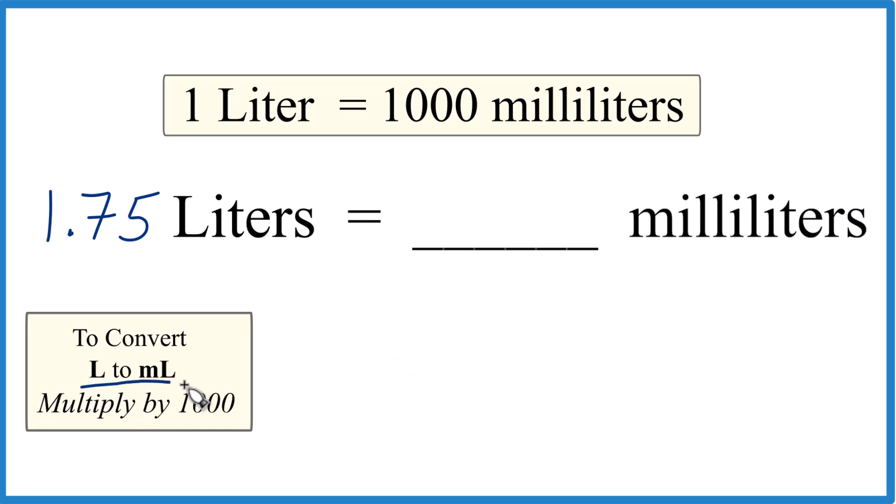So if you're going from liters to milliliters, just multiply by 1,000. 1.75 liters, and we're going to multiply that by 1,000. But that 1,000, that's 1,000 milliliters in one liter. So that's milliliters in one liter.